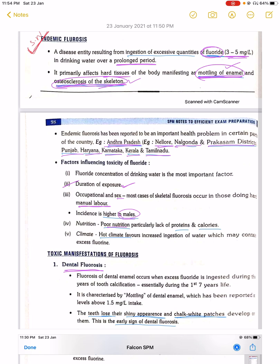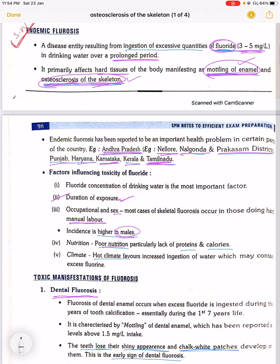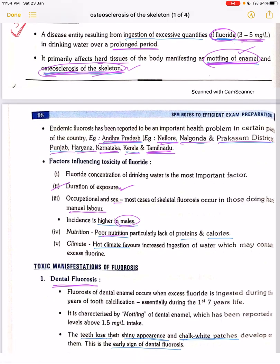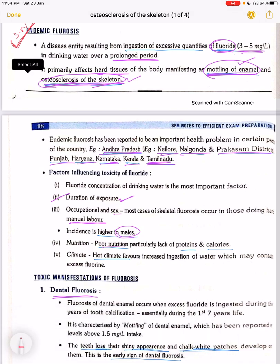Endemic fluorosis primarily affects hard tissues of the body, manifesting as mottling of enamel and osteosclerosis of the skeleton. It is seen in states like Andhra Pradesh, Punjab, Kerala, Haryana, and Tamil Nadu. We have to prevent them by treatment of water.